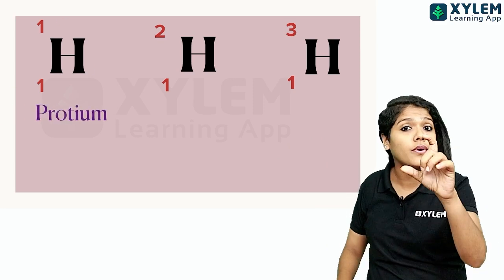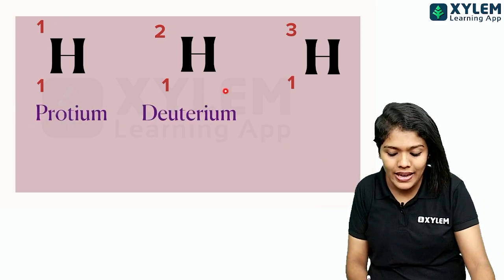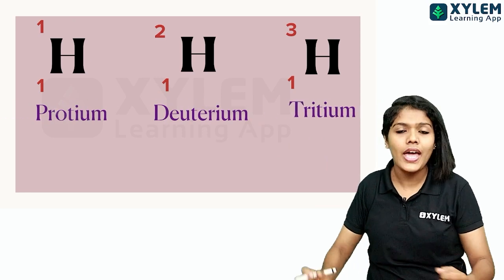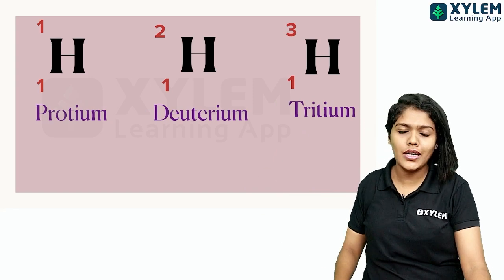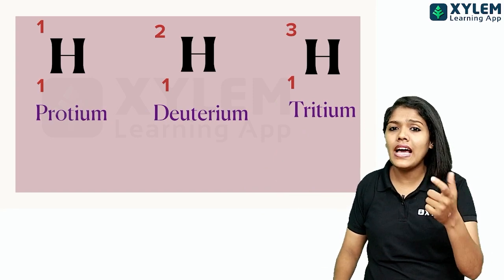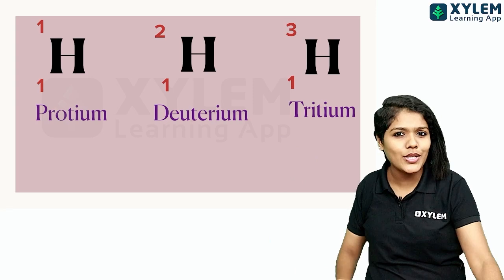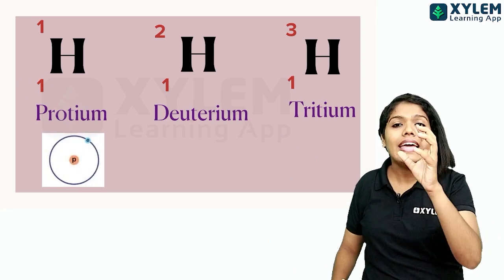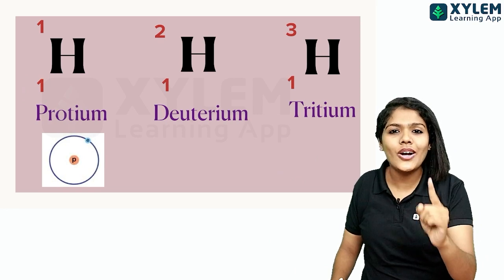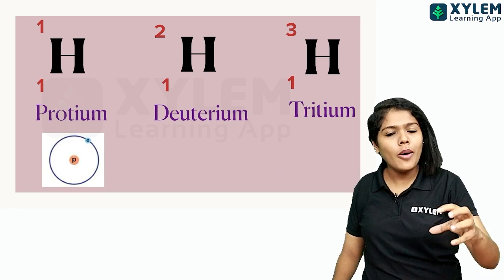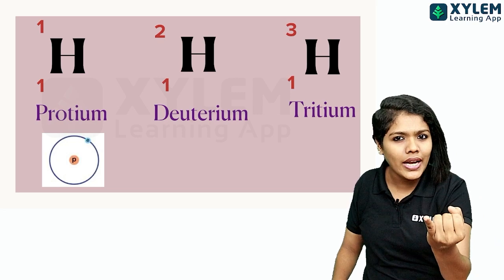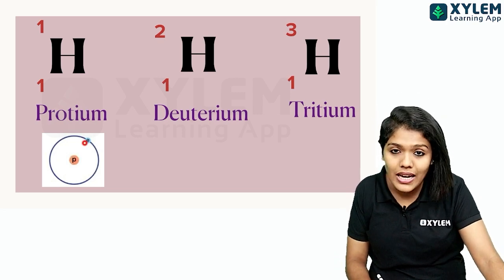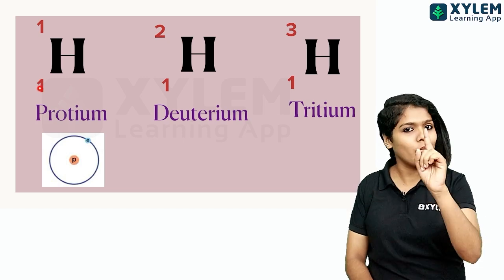H-1-1 means it is protium. H-1-2 means it is deuterium. H-1-3 means it is tritium. So protium, deuterium, and tritium all have the same number of electrons because the atomic number is 1 for all of them. That means 1 proton and 1 electron each. But they differ in the number of neutrons.